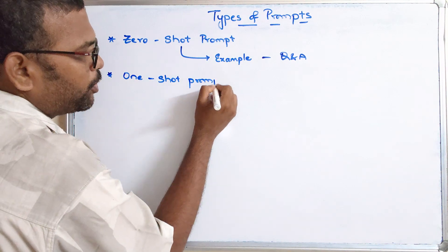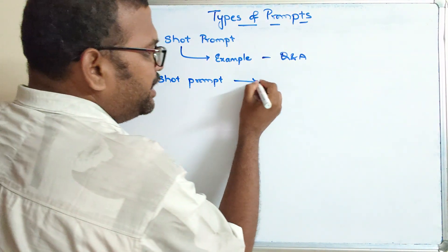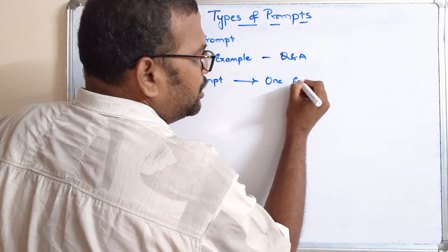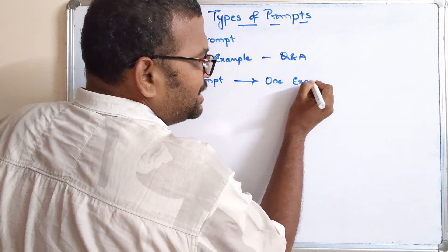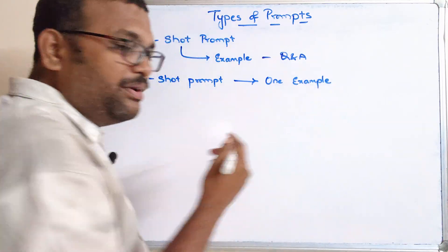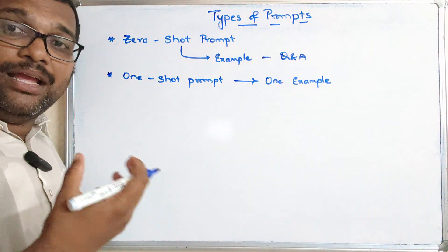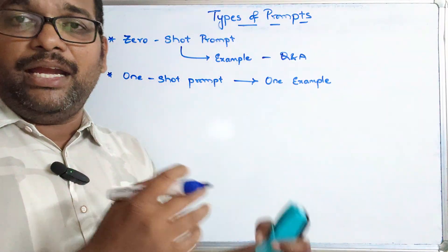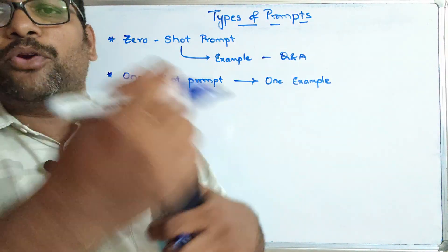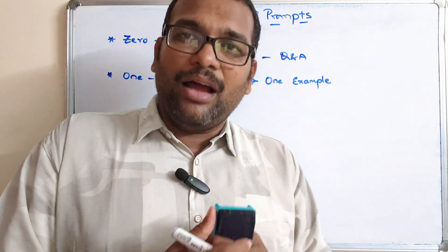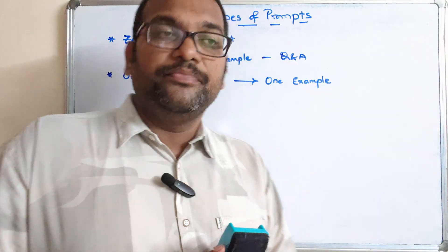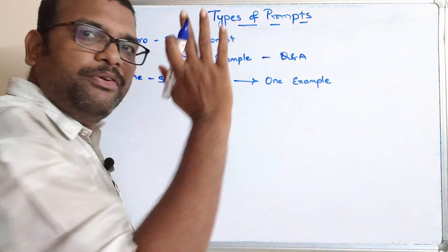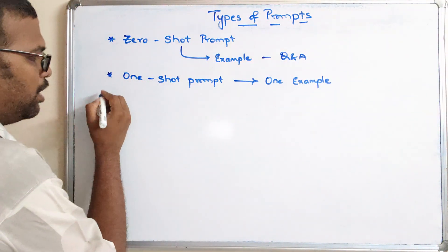The second category is the one shot prompt. The name itself indicates that one example will be given. From that one example it understands how you require the output, and from that understanding it generates the output. So that is a one shot prompt — one example is given to the AI model.